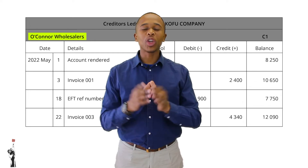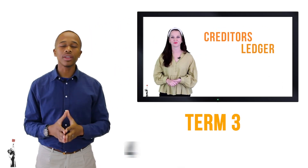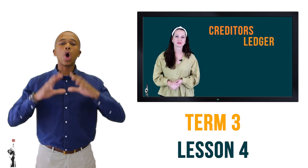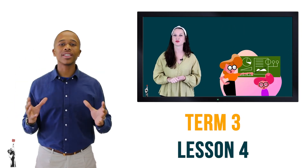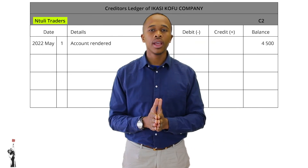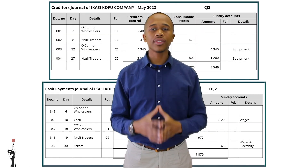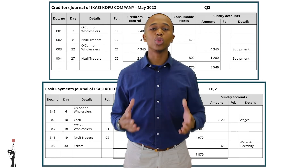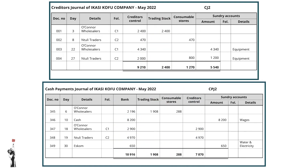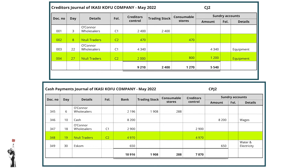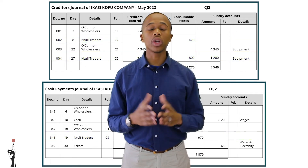Did you get this right? If you did, well done. If you're still struggling, please revisit Term 3 Lesson 4, as in this lesson we're looking at the holistic view of the previous lessons. Now let's have a look at the next creditor — that is Ndouli's Traders. We've already recorded the balance. Looking at the journals, as you can see in the tables there were three transactions dealt with Ndouli's Traders — let's deal with these in chronological order.